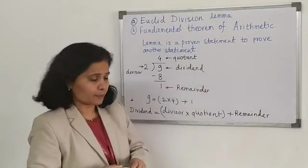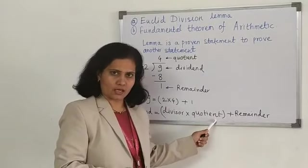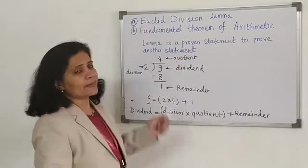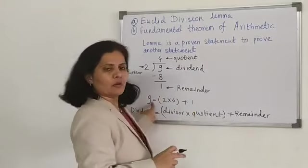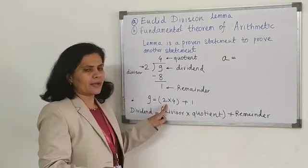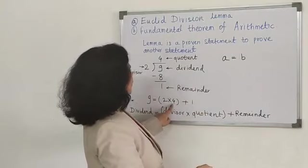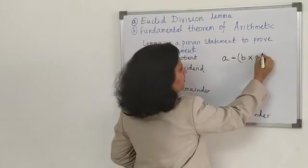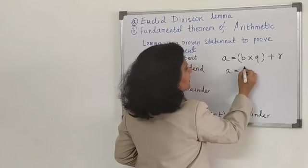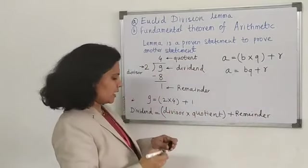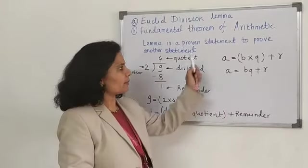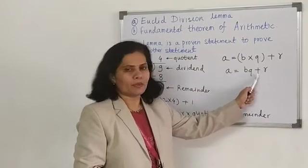I will write this in alphabets format. Suppose I am writing A for 9. A is equal to - for 2 I am writing B. For 4, what is 4? 4 is quotient, so I am writing Q here, plus 1 as R. Which can also be written as A = BQ + R. Same thing - dividend equals divisor into quotient plus remainder.